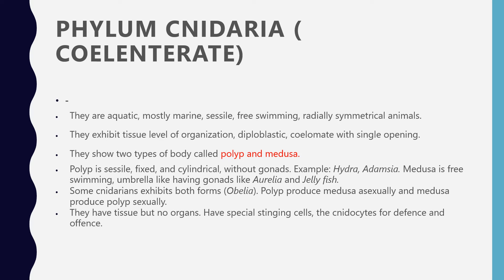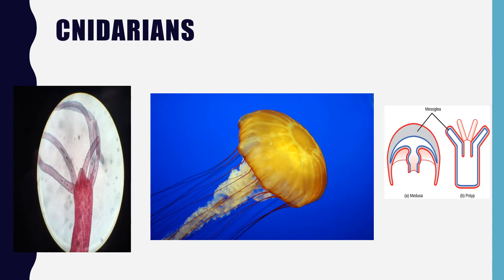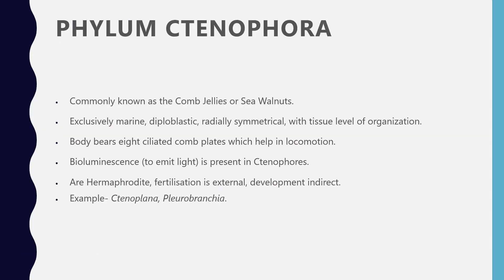Some cnidarians exhibit both forms — for example, Obelia. The polyp produces medusa asexually, and medusa produces polyp sexually. They have tissues but no organs. A key feature is special stinging cells called cnidocytes, used for defense and offense. You can see jellyfish here — the medusa form is umbrella-like and the polyp is fixed, like Hydra.